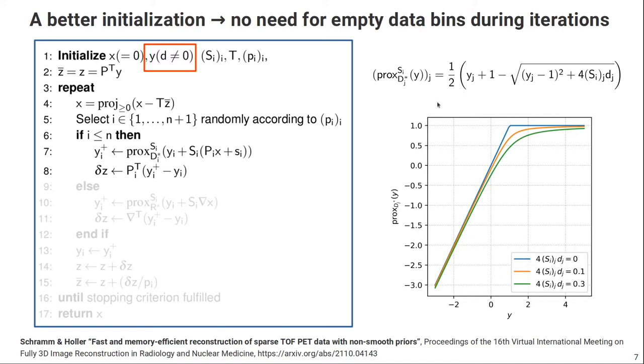And that's because if you have a look at the proximal operator, you can see in bins without data it has the blue shape here. And since all those terms are positive, Y always stays one. And that means even if the updated Y stays one, then you back-project zeros in those bins and those bins do not contribute to your image update.